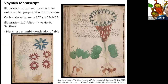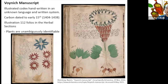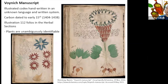Here is an old codex — an illustrated manuscript handwritten in an unknown language and writing system, dated to the 15th century, with 112 folios in the herbal section. The plants here are ambiguously identifiable; we cannot determine the true species. But we can recognize them as plants because they show a flower, leaves, and roots. For identification purposes, this type of illustration is not useful.